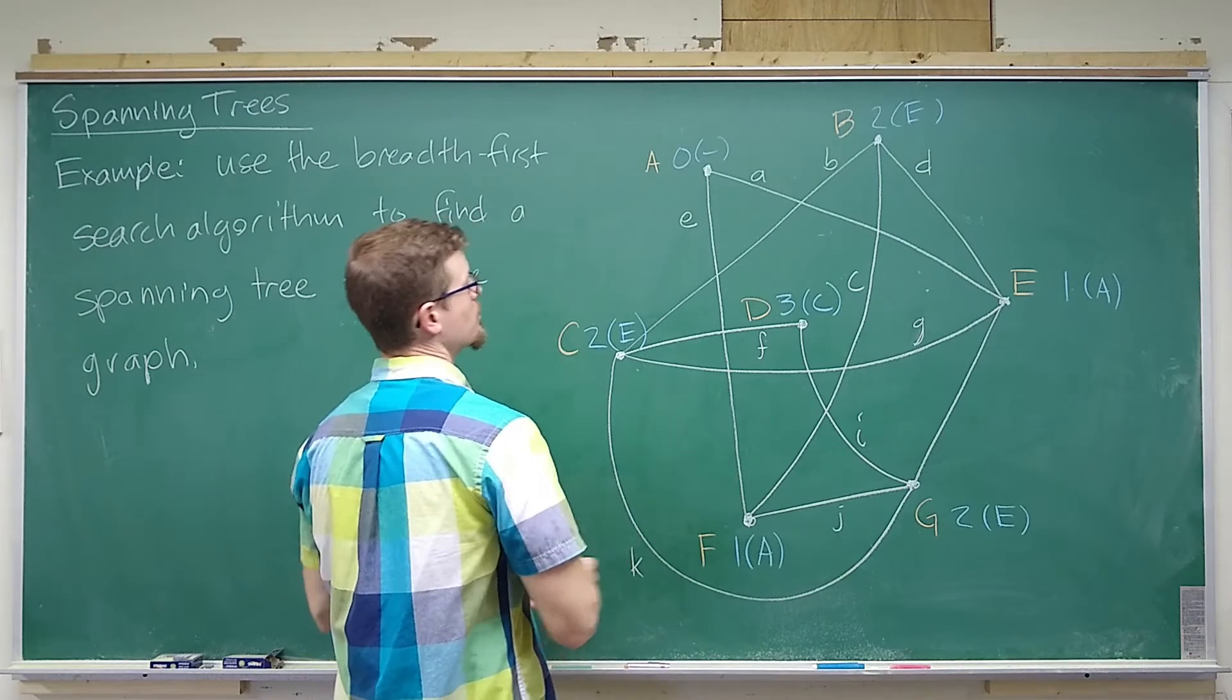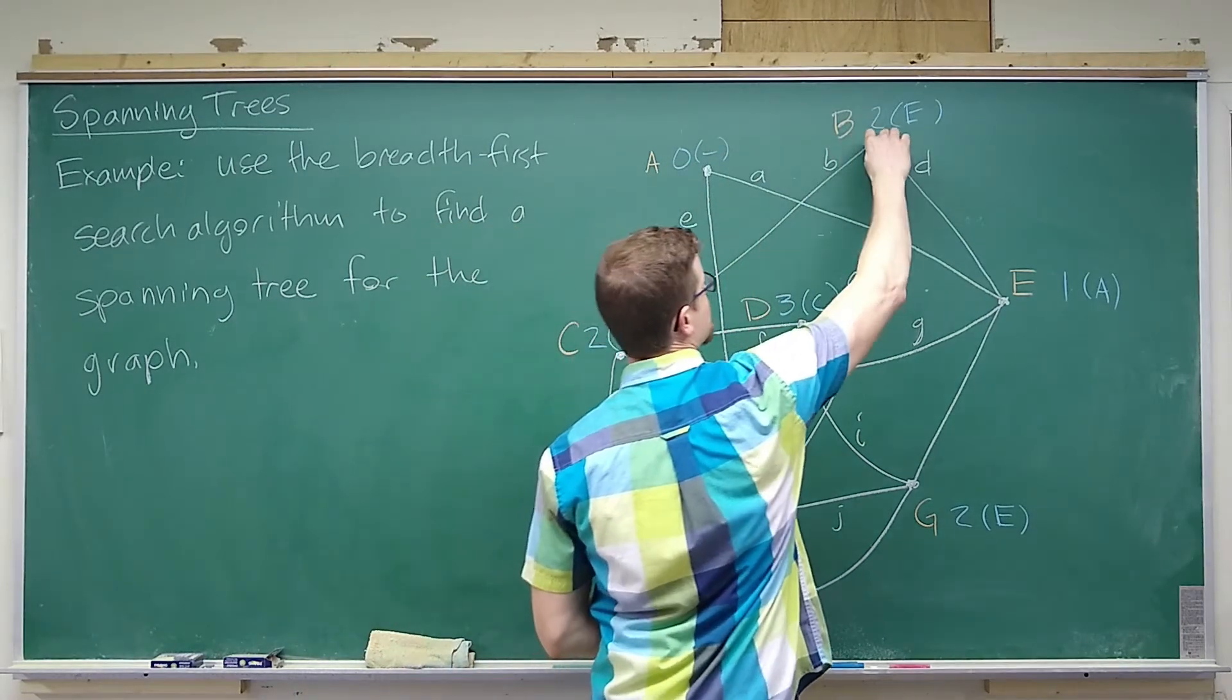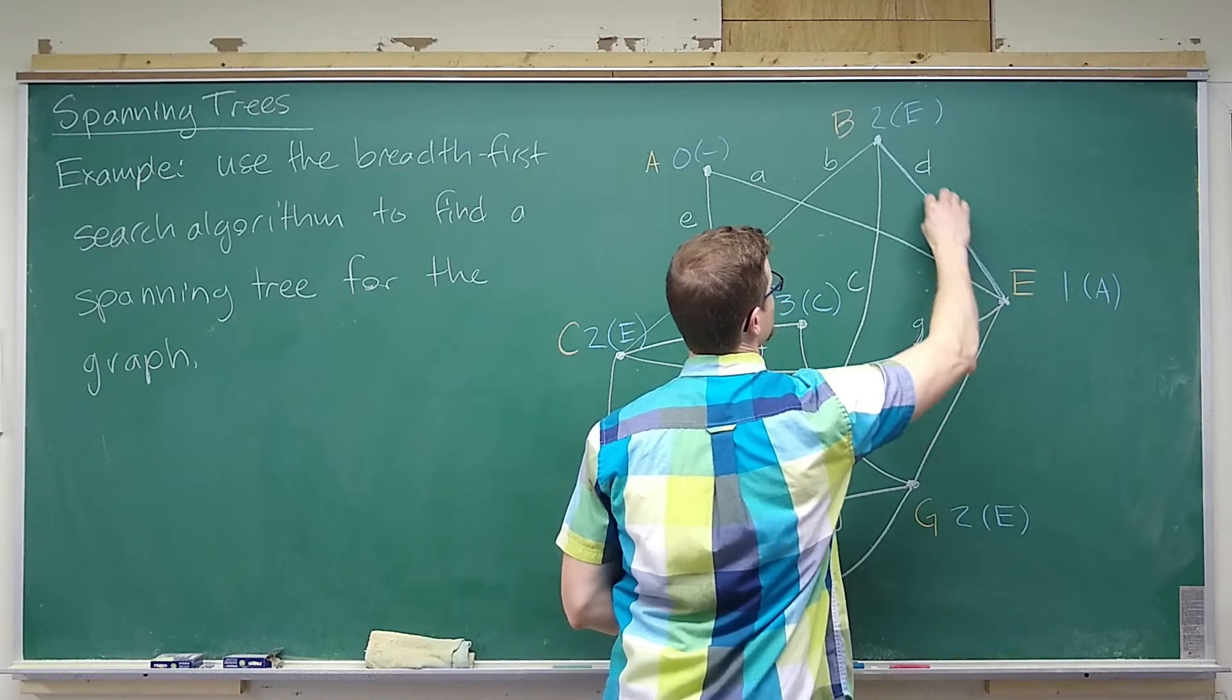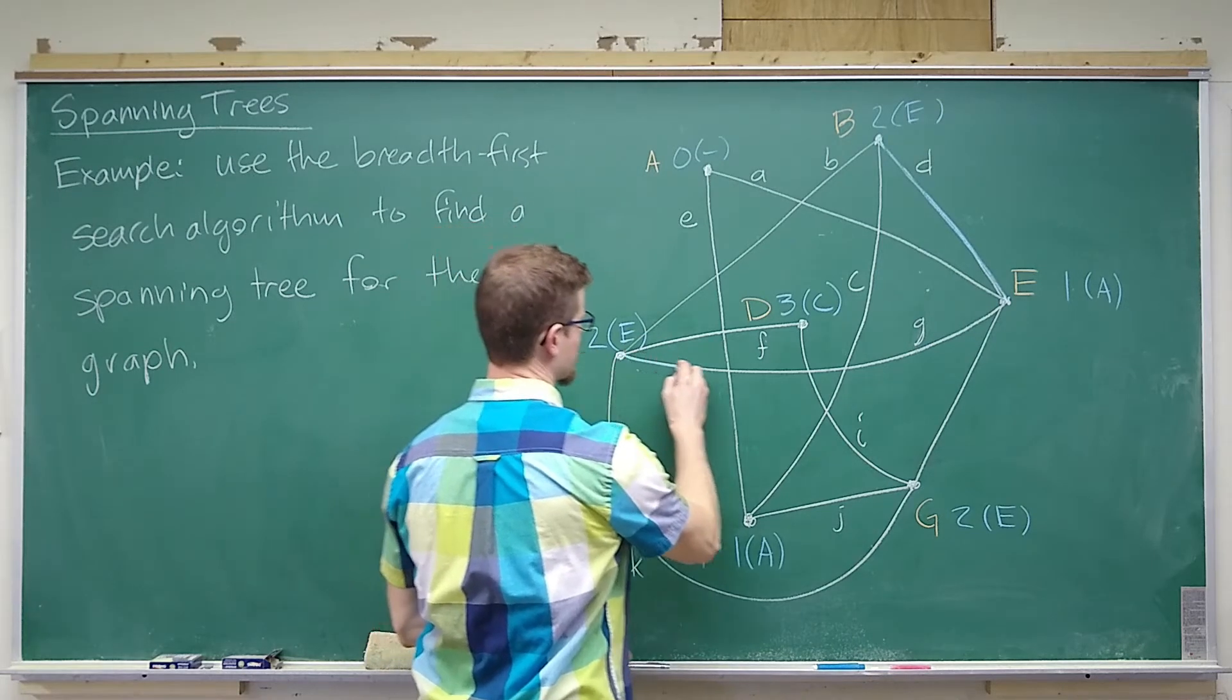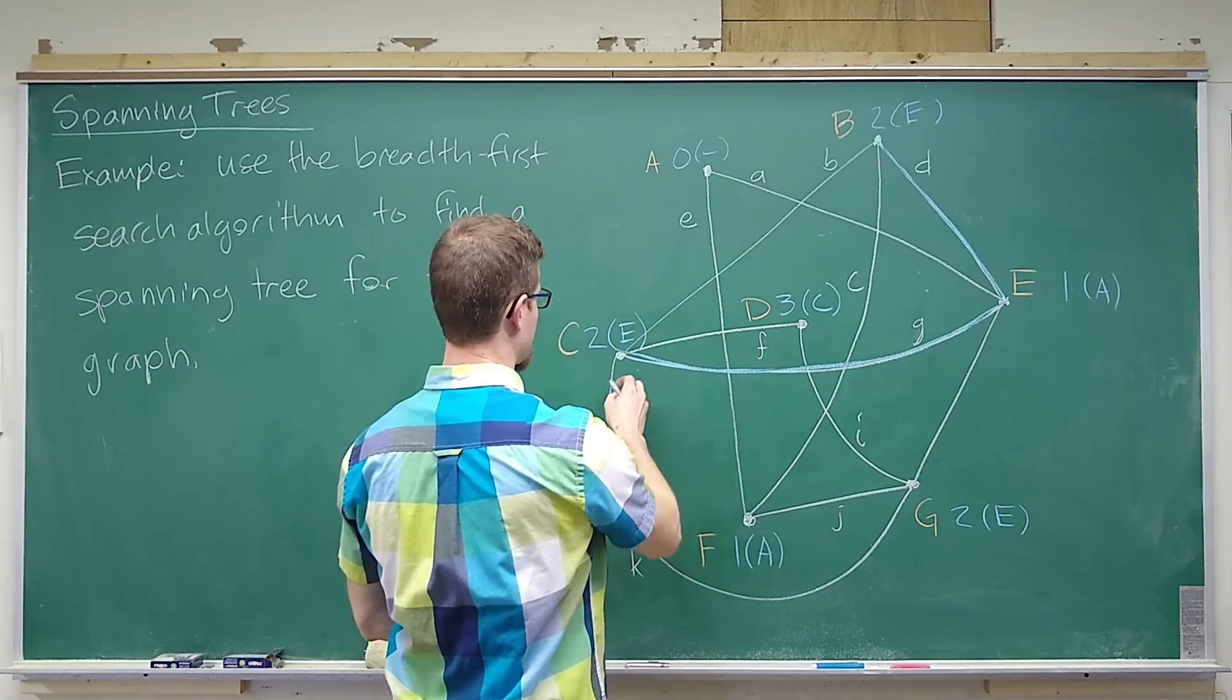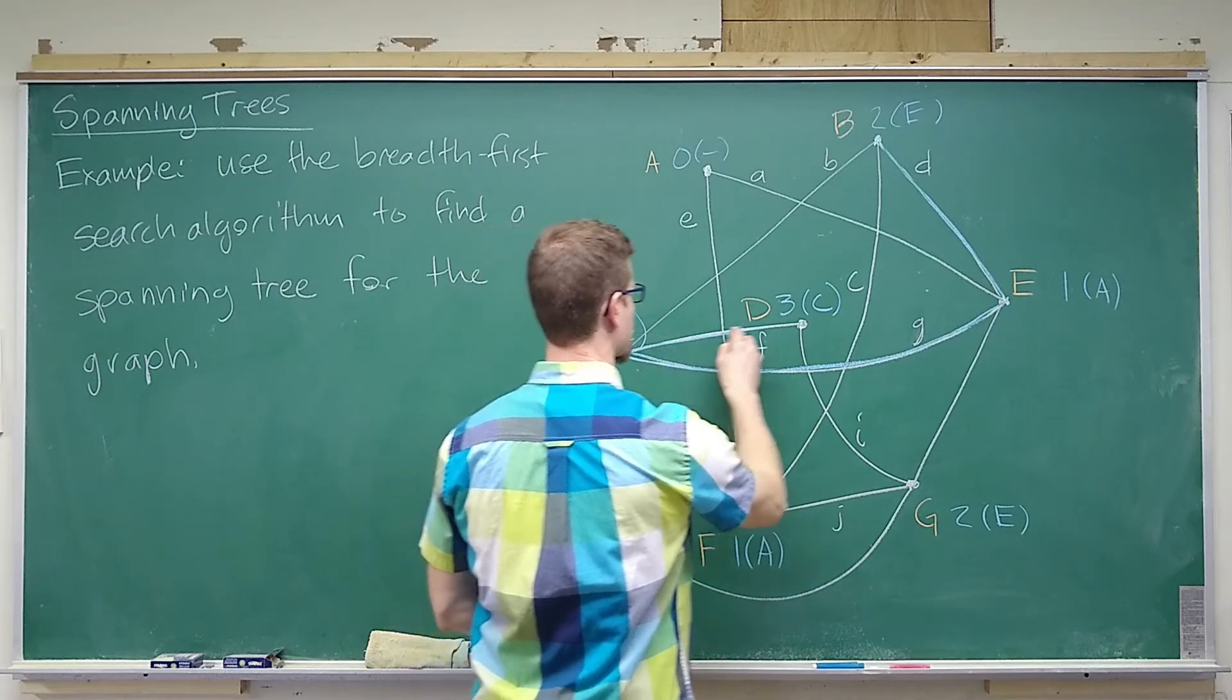A has no predecessor, B has predecessor E, so we just connect B to E. C has predecessor E, so we connect those two. And then we have D has predecessor C, so we connect those two.